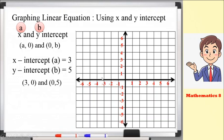We're going to plot these two points on the Cartesian plane. For the point (3, 0): starting from the origin, x is positive 3, so we move 3 units to the right — 1, 2, 3. Since y equals 0, our point is at positive 3 on the x-axis.